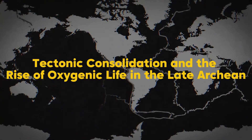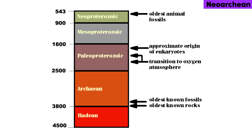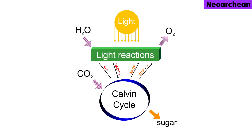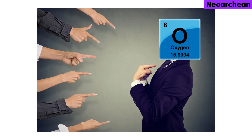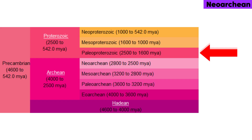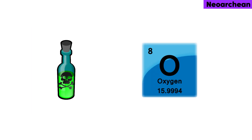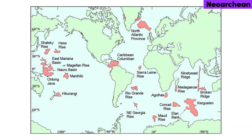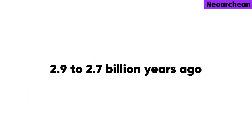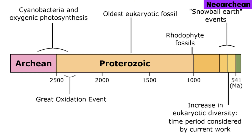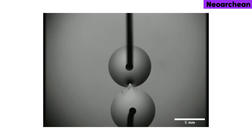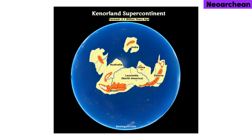Tectonic consolidation and the rise of oxygenic life occurred in the late Archean. Oxygenic photosynthesis first evolved in this era and was accountable for the oxygen catastrophe — a poisonous buildup of oxygen in the atmosphere — which happened later in the Paleoproterozoic, produced by oxygen-producing photoautotrophs that evolved earlier in the Neoarchaean. A huge pulse in the formation of island arcs and oceanic plateaus took place worldwide from 2.9 to 2.7 billion years ago. By the time of the Archean-Proterozoic boundary, about 2.5 billion years ago, many small cratons had coalesced into one large supercontinent that some scholars refer to as Kenorland.